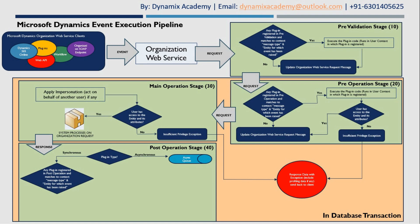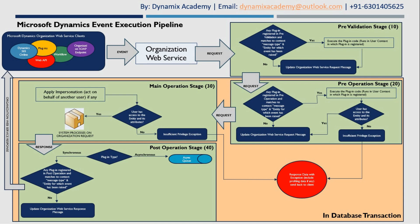If the plugin is synchronous, the platform checks whether there are any plugins registered in the post-operation stage that match the message type and entity for which the event has been raised. If no such plugins are found, it updates the organization web service response message and that updated response message is passed back to the Dynamics 365 web service client. If such plugins are found, it executes that plugin code under the user's context for which the plugin is registered, then checks whether the user has access to all required entities and attributes within the scope of that plugin.